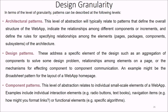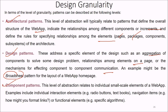In terms of design granularity — levels of detail — patterns can be described at different levels: architectural pattern, design pattern, or component pattern. Architectural patterns relate to patterns that define the overall structure of the web app, indicate relationships among different components and increments, and define rules specifying relationships among elements like pages, packages, components, and subsystems. Design patterns address a specific element of design, such as aggregation of components to solve a design problem, relationships among elements on a page, or mechanisms for component-to-component communication — for example, a broad sheet pattern for layout. Component patterns relate to individual small-scale elements of a web app, such as individual interaction elements like radio buttons or text boxes, navigation items like link formatting, or specific algorithms.